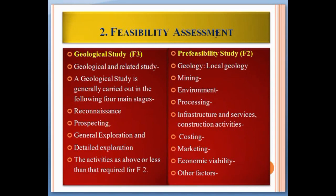The second axis is feasibility assessment. The lowest category is F3, which requires geological and land-related study. Geological study is generally carried out in four mini-stages: reconnaissance, prospecting, general exploration, and detailed exploration. F3 activities are less than those required for F2. The F2 category is known as a 'pre-feasibility study' and requires geology, local geology, mining environment, processing, infrastructure and services, construction activities, and other factors.